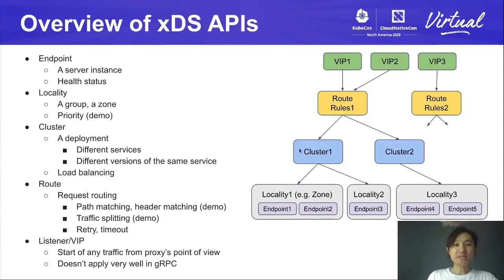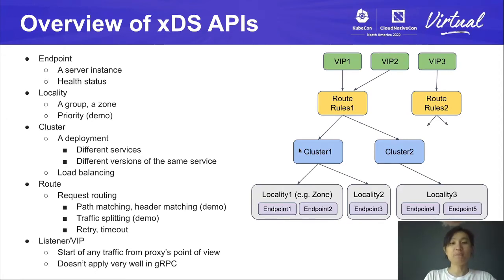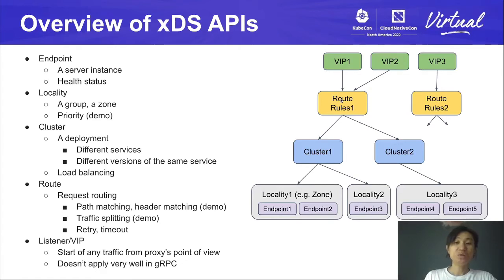Above locality is cluster. A cluster you can see as a deployment. You can have deployments for different services, and you can also have deployments for different versions of the same service, which can be helpful if you have two versions and are migrating from one to the other. Cluster is also where load balancing is configured — it contains how to do load balancing between localities and how to load balance endpoints within a locality. Above cluster is the route, which is where request routing happens. This is where you do path matching and header matching. You can send specific traffic to a certain cluster or even do traffic splitting between two clusters. This is also where timeout, retry, and other features for a certain route are configured.